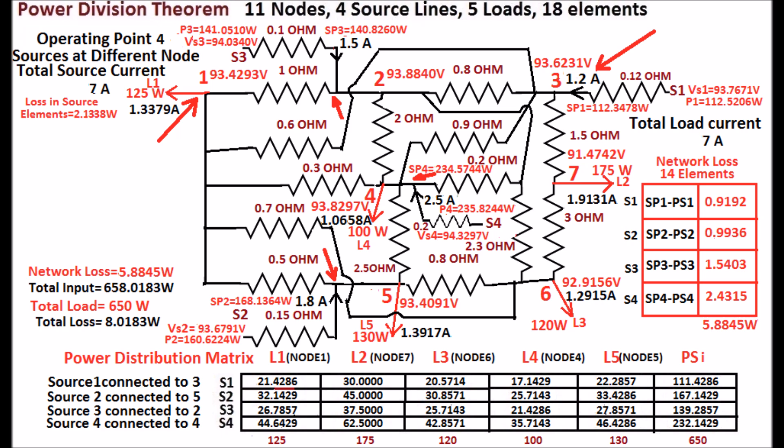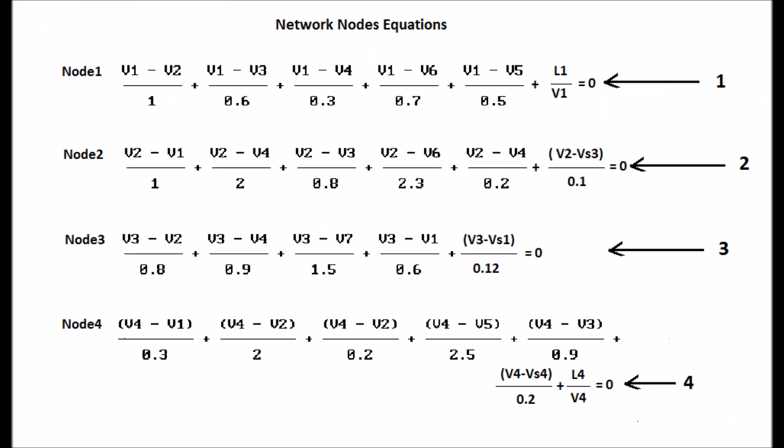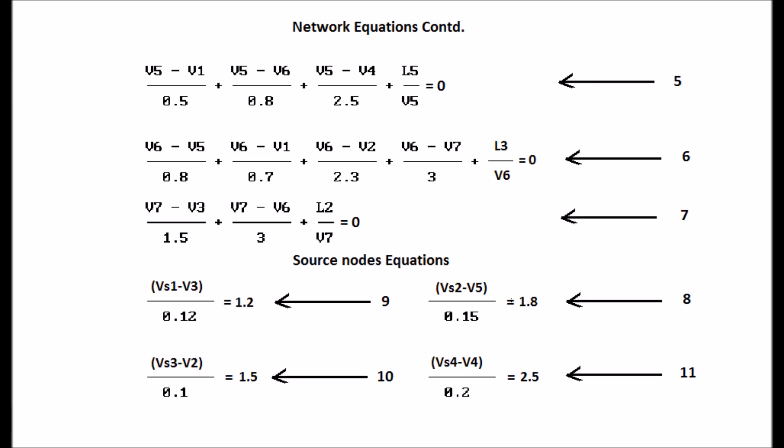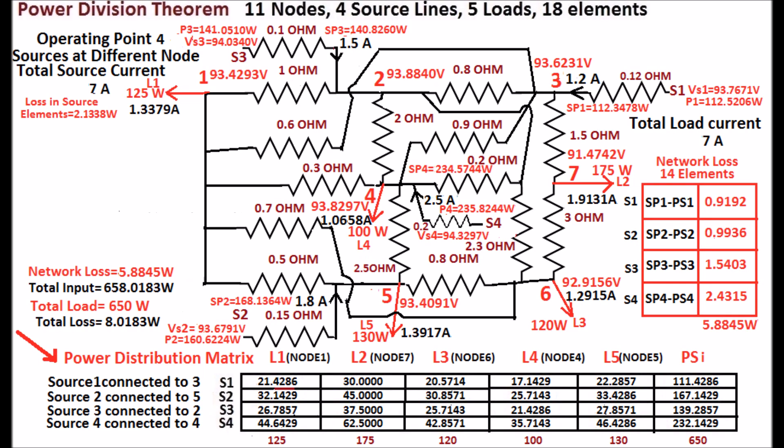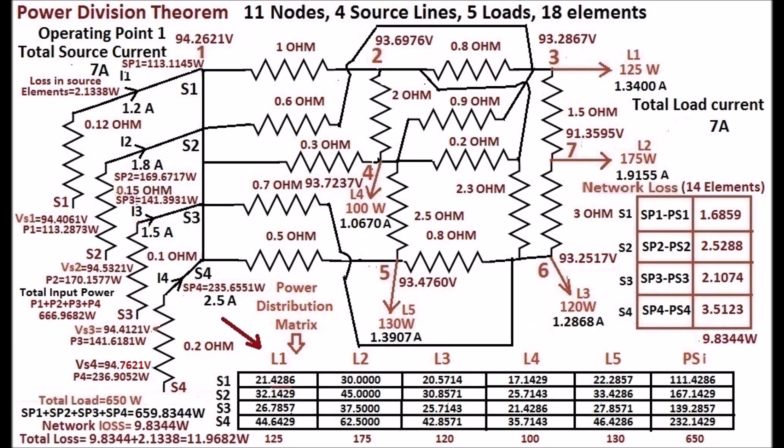Locations of other loads are not changed. Equations are shown for the new location of sources and load in the display. Operating point 4 is found. At operating point 4, source sharing is not changed. It is the same as in the case of operating point 1.